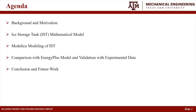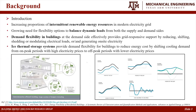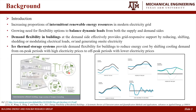About the background, as you can see in the first figure, with the increasing proportions of intermittent renewable energy resources in modern grids, we need to balance the dynamic loads from both the supply side and demand side. And the demand flexibility in buildings are effective ways to provide greater responsive support by their values to improve the efficiency, load shift, moderate, and generation.